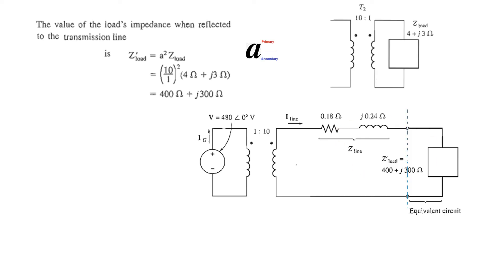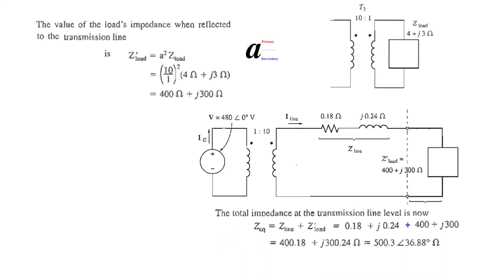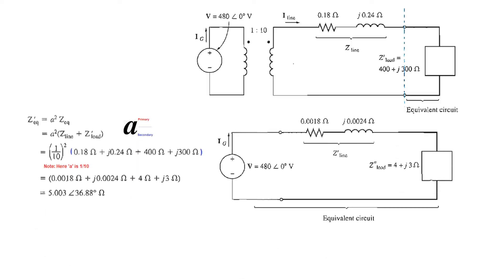Next, we transform the total impedance — the sum of the line impedance and the transformed load — through transformer T1 to the generator side. Here, a = 1/10 for T1 (primary is 1, secondary is 10), so Z_equivalent' = (1/10)² × (Z_line + Z_load') = (1/100) × (Z_line + Z_load'). Dividing by 100, we get the final equivalent impedance Z_dash_equivalent referred to the generator side.